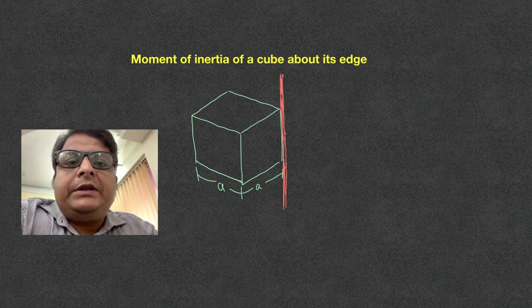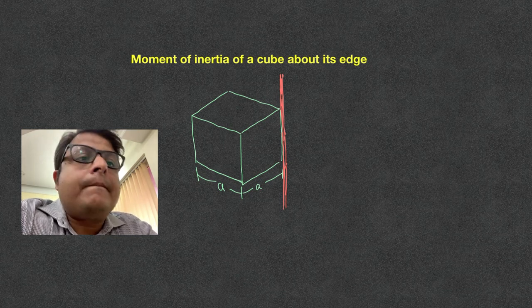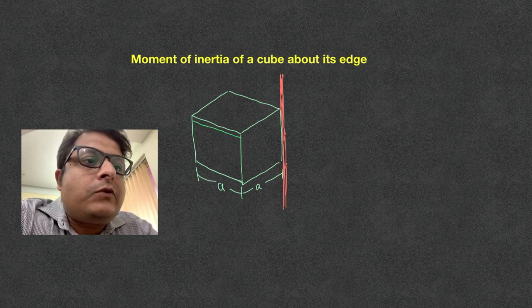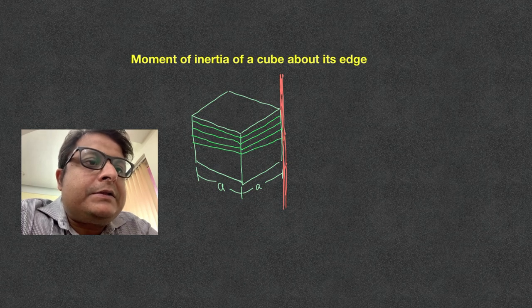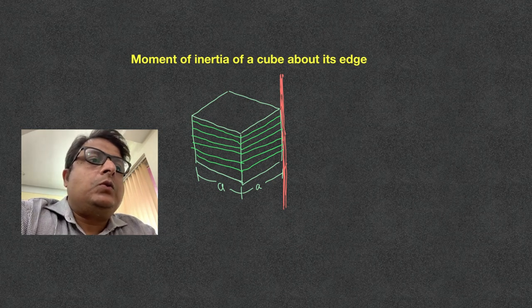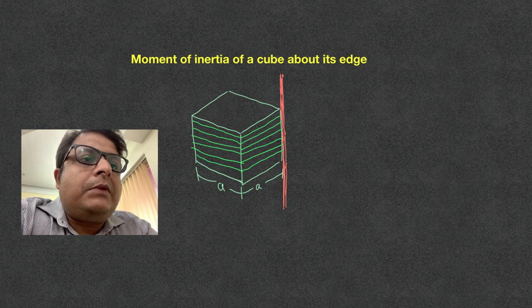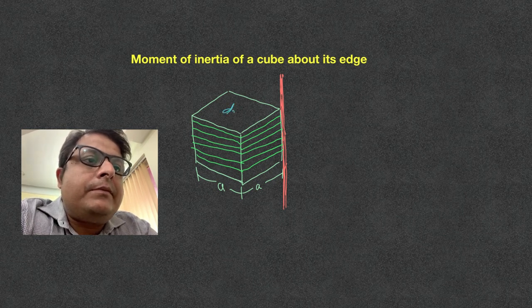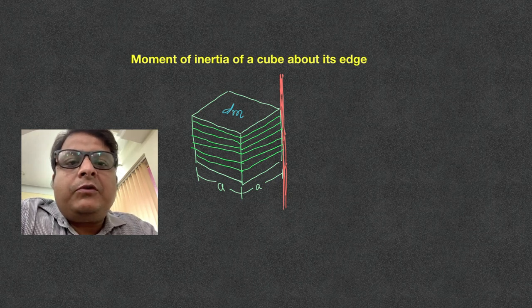Now we can split up the cube into square plates. I say square plates may divide, in square plates. For each square plate, suppose the mass of each square plate is dm. So now for each square plate, moment of inertia about this, I mean if I am looking from the top view.